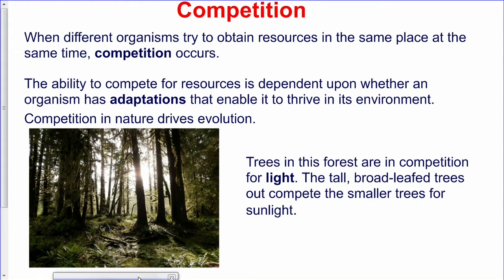Looking at this slide, we can see trees — tall ones and short ones. What is happening in this habitat or community? The tall trees and the short trees, they are competing. When organisms try to compete for resources in the same place and at the same time, competition always occurs. Like the saying: two bulls cannot drink from the same trough at the same time. The stronger one will always overpower the weaker one.